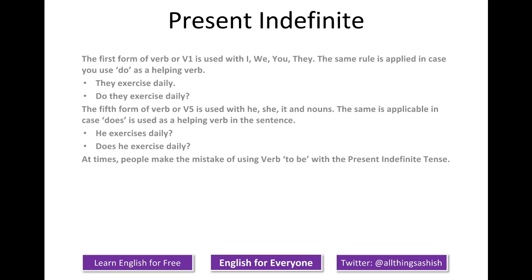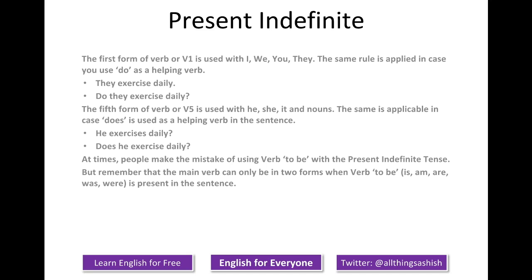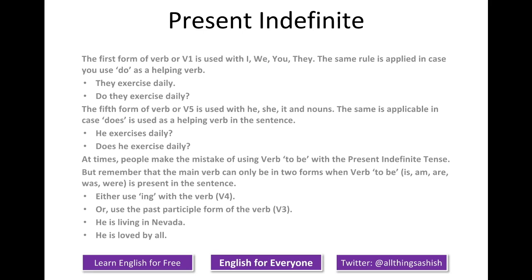At times, people make the mistake of using verb to be with the present indefinite tense. But remember that the main verb can only be in two forms when verb to be — is, am, are, was, were — is present in the sentence. Either use the -ing form of the verb (V4), or use the past participle form of the verb (V3). For example: he is living in Nevada, or he is loved by all. We cannot under any circumstances say 'he is exercise' or 'they are exercise'. The only condition under which we will use is, am, are, was, were is with either V4 or V3.